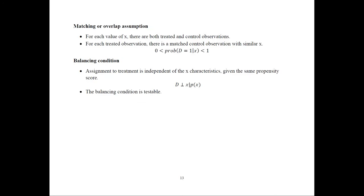The fifth is the balancing condition: treatment assignment is independent of X characteristics given the same propensity score. If propensity scores are similar, X characteristics should also be similar. For example, a 26-year-old in the treated group should be matched with someone roughly similar in age from the control group. Software can test whether this balancing condition is satisfied.